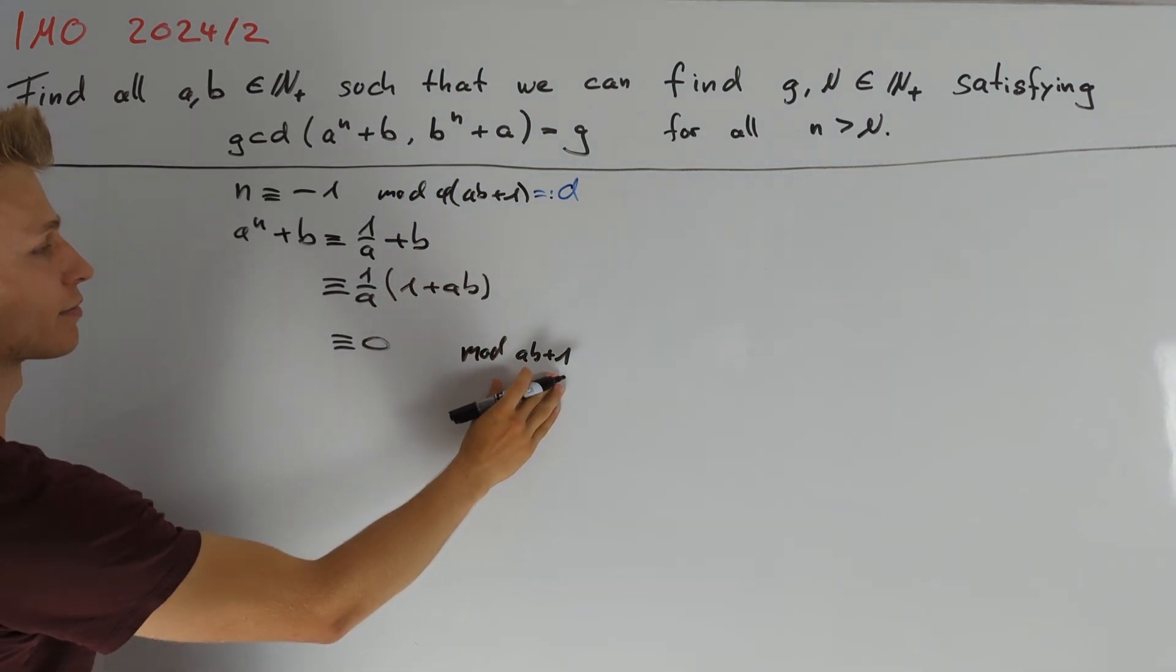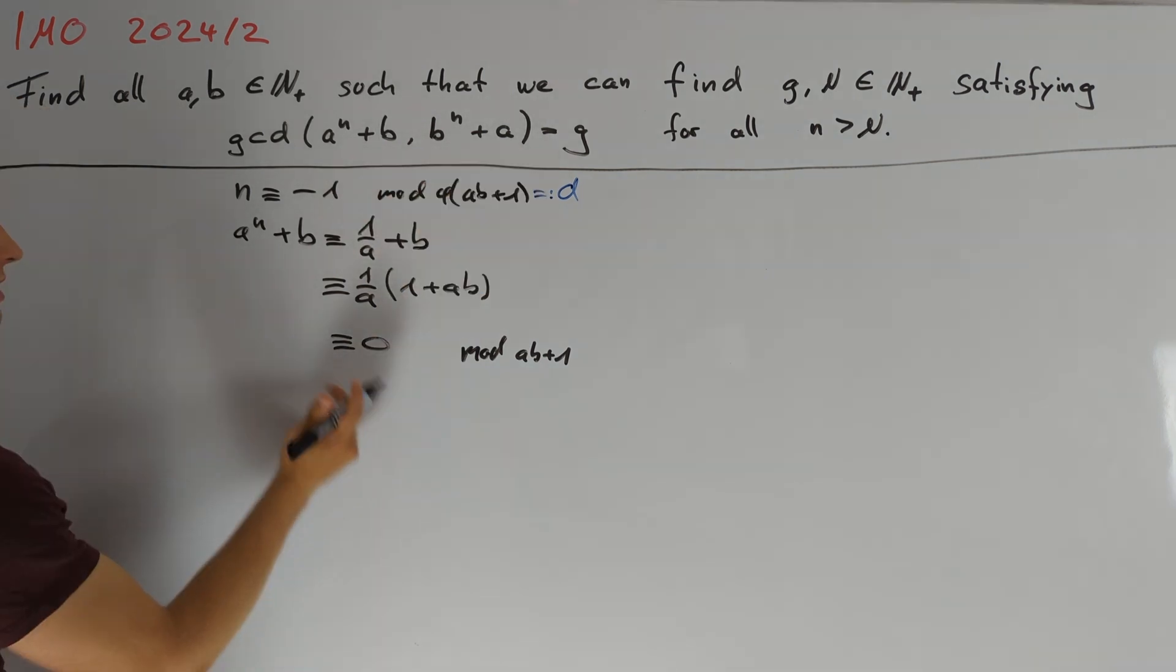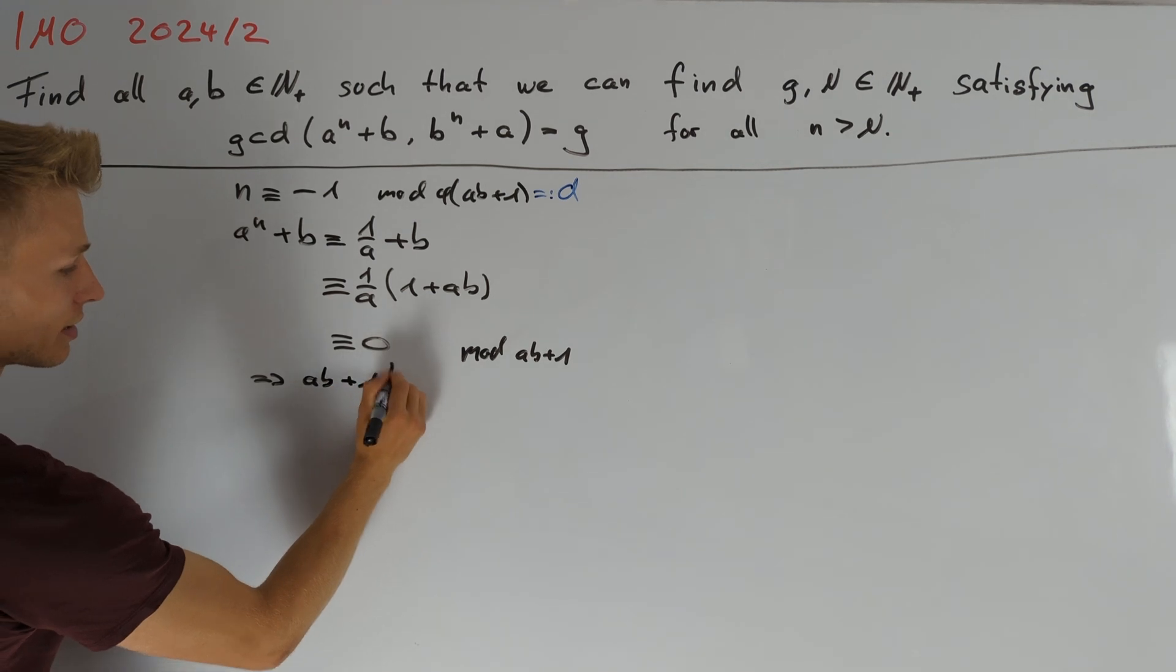By symmetry, ab plus 1 also divides b to the power of n plus a. Since n can be chosen large enough, we can conclude that ab plus 1 divides g.